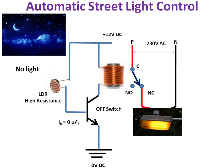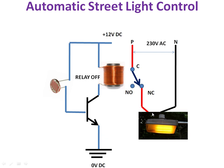When IB equals zero, remember the output characteristics of a transistor: the transistor will be in the cutoff region, meaning it will be in the off state. There will be no current flow through the relay coil, so the NC contact remains NC. The street light will glow because the phase and neutral are connected to it. The relay is off, so the switch remains in the same position and the street light stays on.